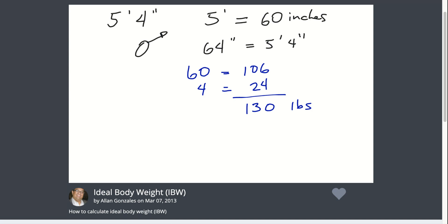However, you will need to put that into kilograms. So basically, you divide that by 2.2 in order to get 59 kilos. So this is the ideal body weight of a 5'4" male patient.